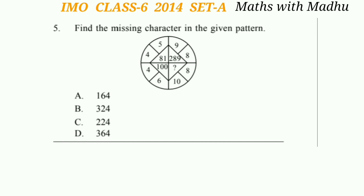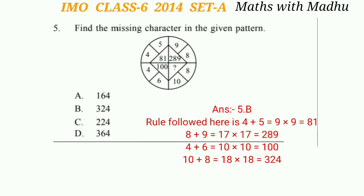Question 5: Find the missing character in the given pattern. In the left upper part: 4 + 5 = 9, and 9 × 9 = 81. In the right upper part: 9 + 8 = 17, and 17 × 17 = 289. In the left lower part: 4 + 6 = 10, and 10 × 10 = 100. For the question mark: 10 + 8 = 18, and 18 × 18 = 324. The correct answer is option B, 324.